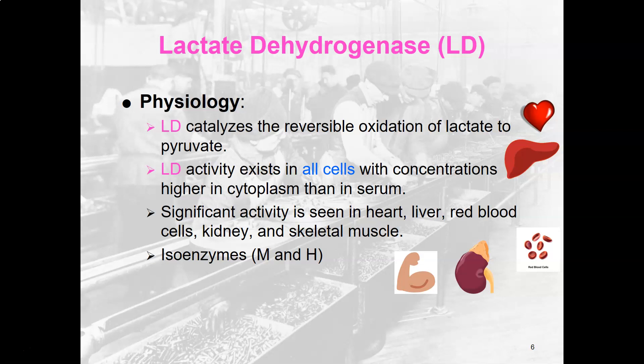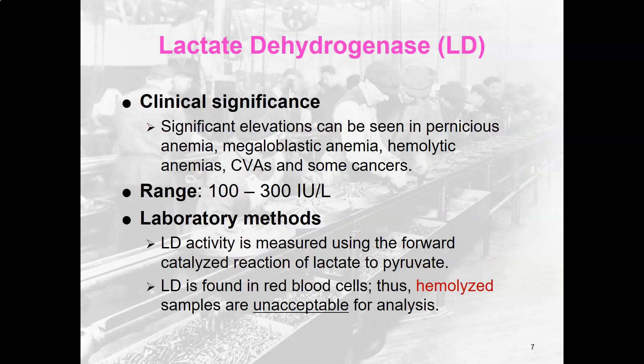LD activity exists in all cells, making it very non-specific. Concentrations are higher in the cytoplasm than in serum. Significant LDH activity is found in the heart, liver, red blood cells, kidneys, and skeletal muscle. There are isoenzymes of lactate dehydrogenase with H and M subunits, but isoenzyme analysis for LDH is rarely done anymore — usually a total level is checked.